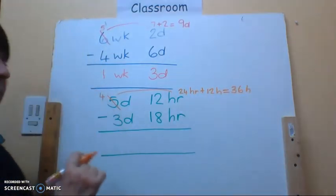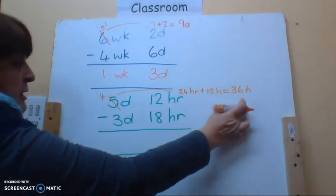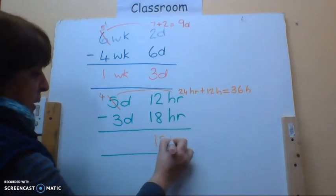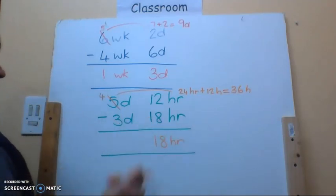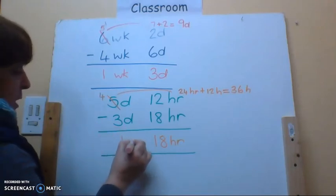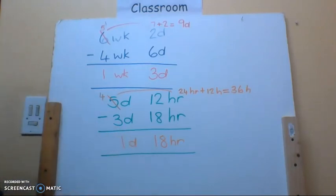So now I can subtract. Now I can say 36 hours minus 18 hours is going to leave me with 18 hours. I'll go across here. Four days minus three days is one day and 18 hours.